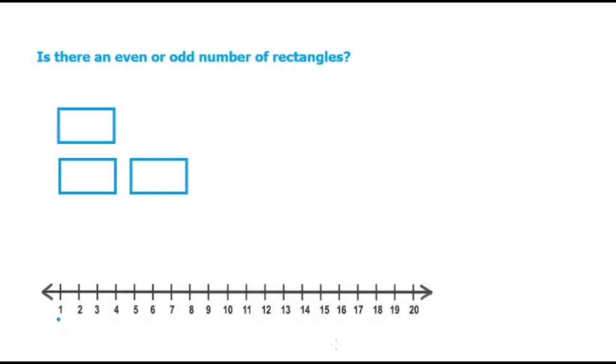As we said, even numbers can be matched in pairs. So, one cannot be matched in pairs. This is odd.